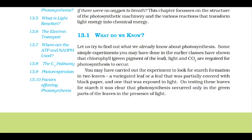Let us try to find out what we already know about photosynthesis. Some simple experiments may have shown that chlorophyll, the green pigment of the leaf, light and CO2 are required for photosynthesis to occur. On testing leaves for starch — a variegated leaf or one partially covered with black paper — it was clear that photosynthesis occurred only in the green parts of the leaves in the presence of light.